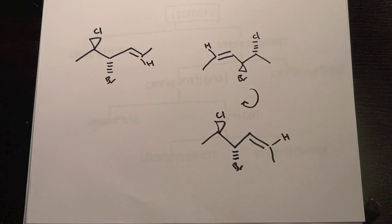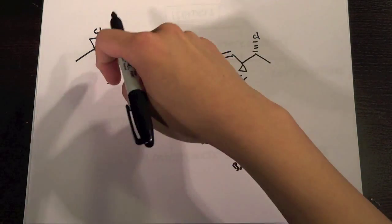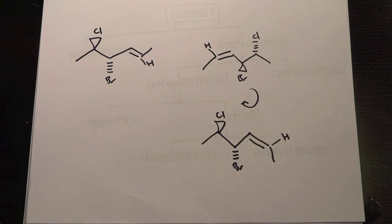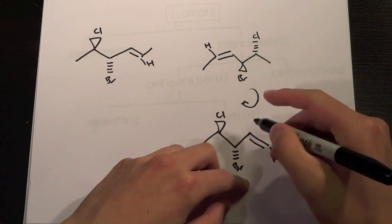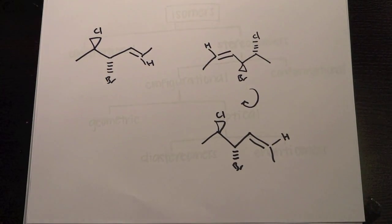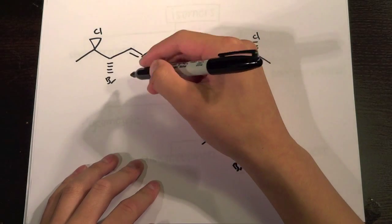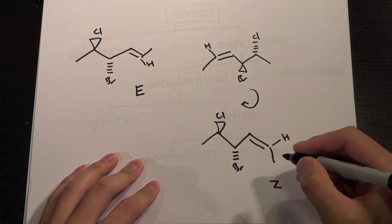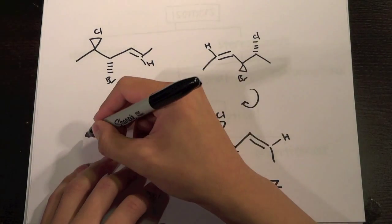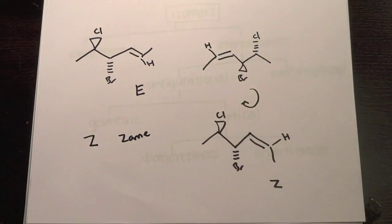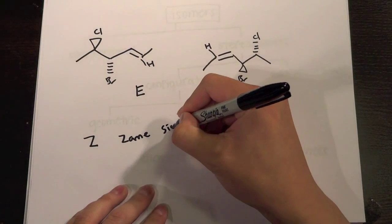So what we have to compare between these two is this is the same, this is the same, the only thing that's different is that these are going in, you know, the CH3 is going down and the CH3 is going up in that direction. And if you remember before, this would be considered E and this would be considered Z. And how I always remember that is Z is on the same side, so the same side, just remember that.